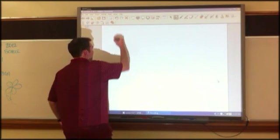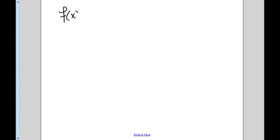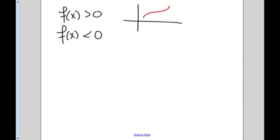So let me try to summarize this. I've got f of x, the original function. If f of x is greater than 0, then I know that it's above the x-axis somewhere. If f of x is less than 0, then I know that on the graph it's going to be below the x-axis somewhere.